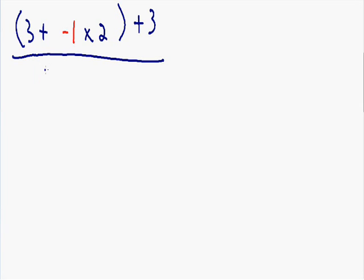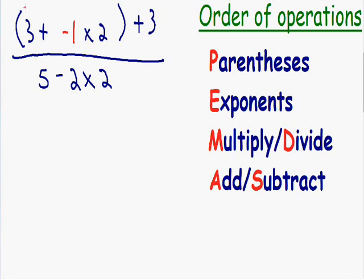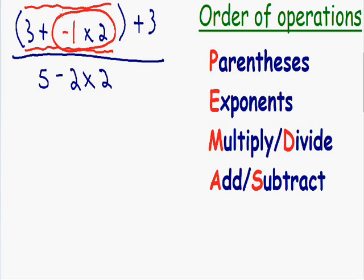On the bottom of the expression we have five minus two times two. Moving on with our example — notice how we still have another set of parentheses. Parentheses is our first order of operations, so we always need to get rid of our parentheses first. There are no exponents inside the parentheses, so we skip our second order of operations. But there is multiplication and division, so we can't skip our third order of operations. We have a negative one being multiplied by positive two. Negative one multiplied by positive two is equal to negative two, and the rest of our expression stays the same. We have three plus negative two, then plus three outside of the parentheses.